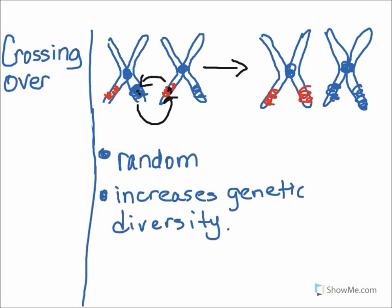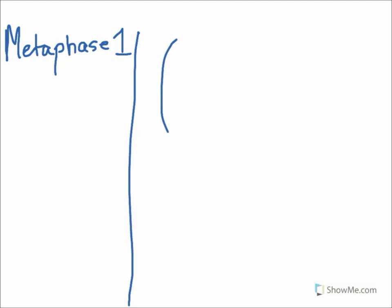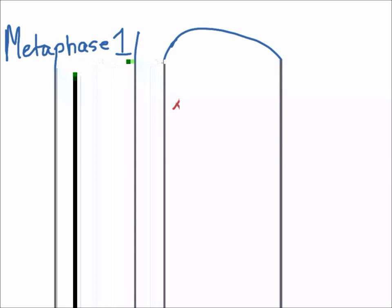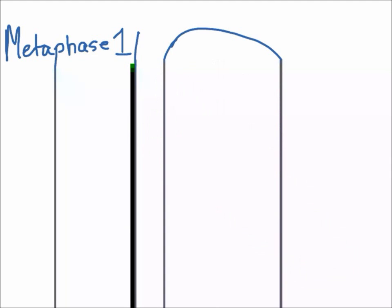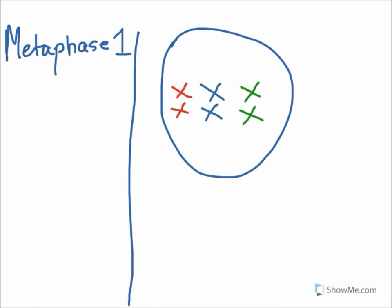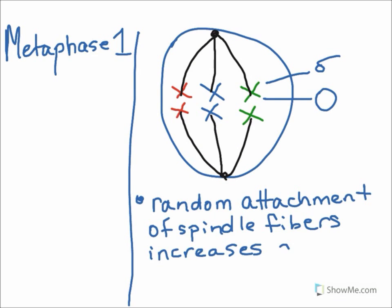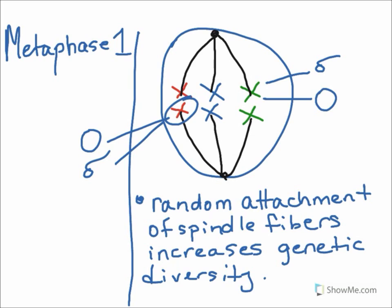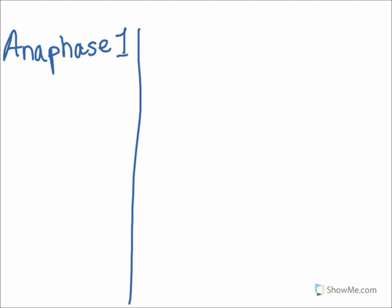The next phase is metaphase. During metaphase, the homologous pairs of chromosomes line up on the equator of the cell. I'm just going to draw three tetrads for the sake of time. Because the spindle fibers attach to each homologous pair randomly, male and female chromosomes are pulled to random sides of the cell and result in a random mixture of chromosomes on either side of the cell. This is another way that meiosis increases the genetic diversity in the offspring.